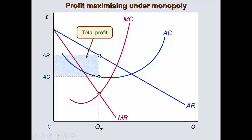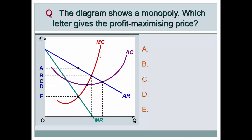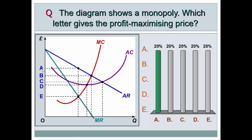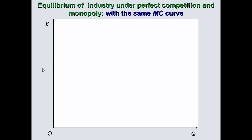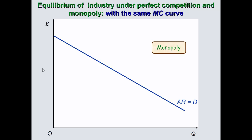Quick question: the diagram shows a monopoly — which point represents the profit-maximizing price? The answer is not where MC = MR, which determines the quantity. To find the price, you trace upward from that quantity to the average revenue (demand) curve — that point, labeled A, gives the profit-maximizing price.